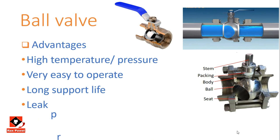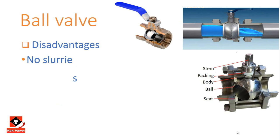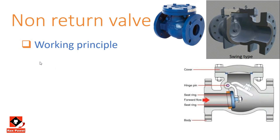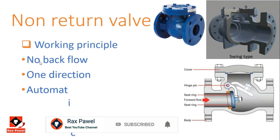Disadvantages of the ball valve: it is not suitable for slurries, as solid matter can damage the sealing surface due to dead space, and it requires proper maintenance. Working principles of the non-return valve, also known as the check valve: its function is to prevent backflow by means of a moving seating ring. It allows flow in only one direction and is usually essential after a pump, working automatically such as during a power cut. There are three types: swing, dual, and lift.